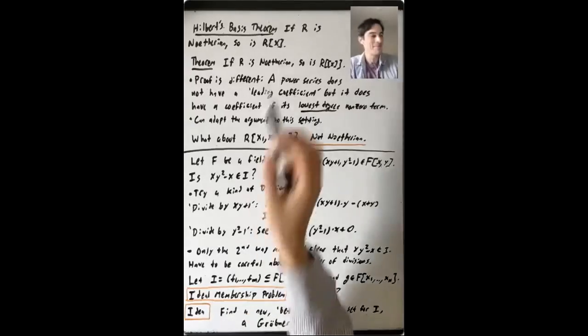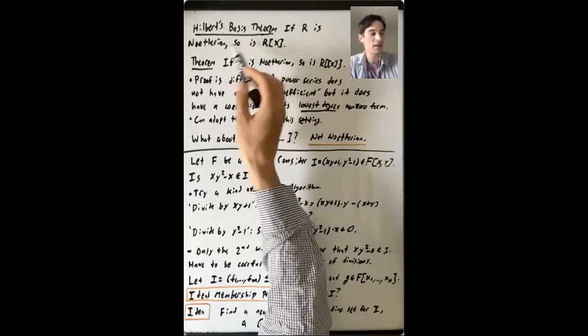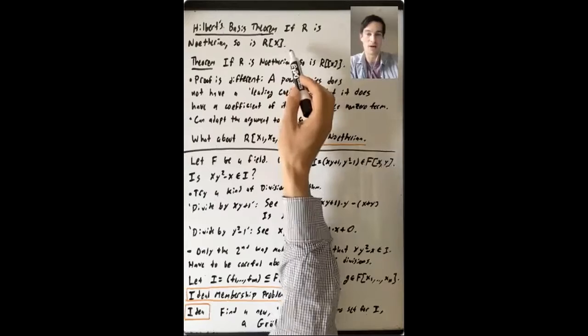All right, so what did this theorem say? R is a commutative ring with identity. If R is Noetherian, so is the polynomial ring R bracket X.